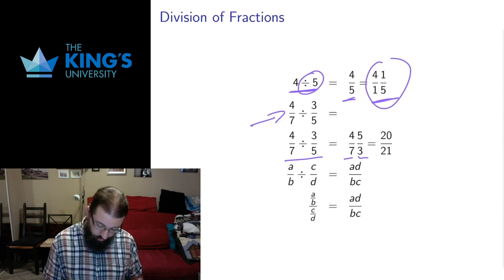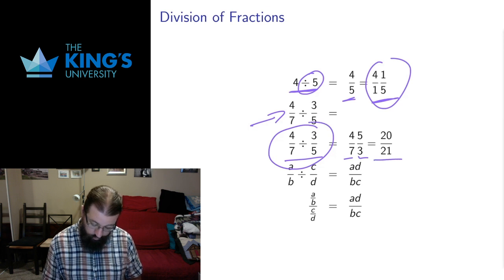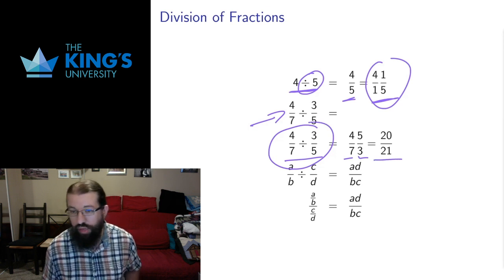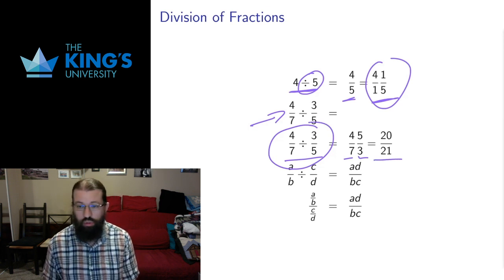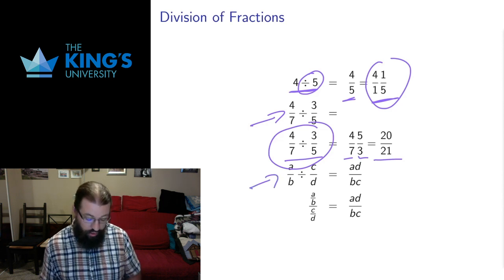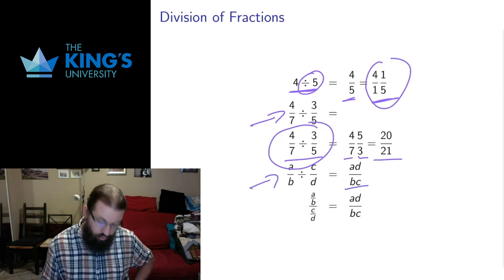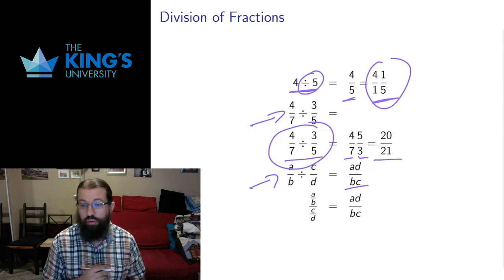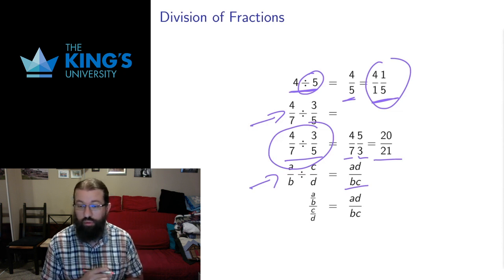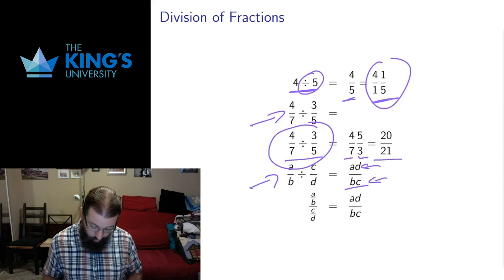To divide four-sevenths by three-fifths, I take four-sevenths and multiply by the reciprocal — the flip — of three-fifths, which is five-thirds. Four times five is twenty, seven times three is twenty-one, so four-sevenths divided by three-fifths equals twenty over twenty-one. Stated generally: a over b divided by c over d equals a times d over b times c, since dividing by c over d is the same as multiplying by the reciprocal d over c.